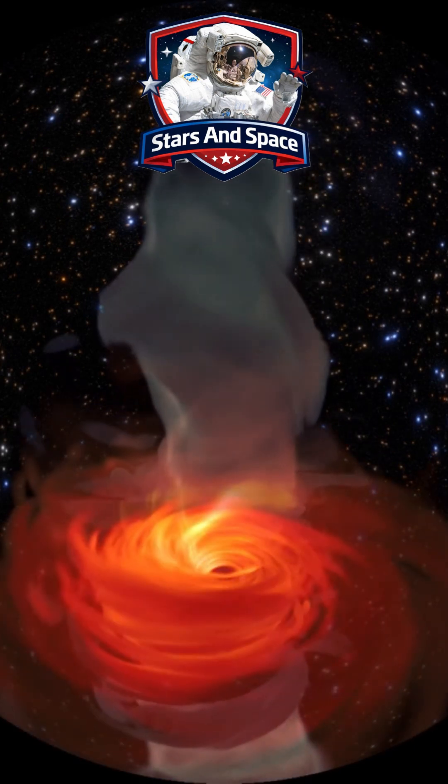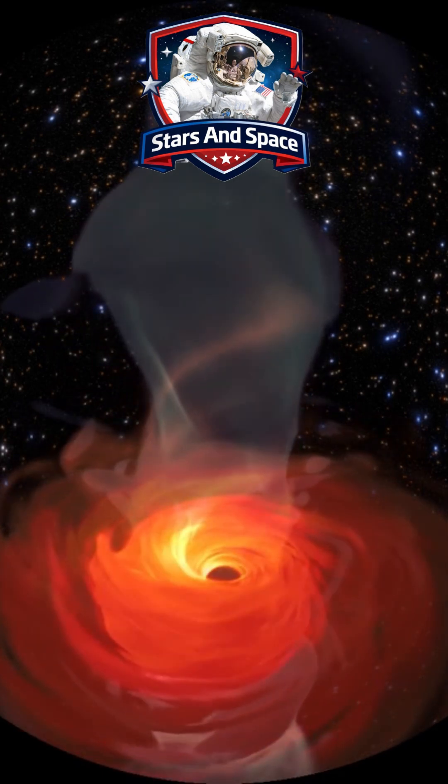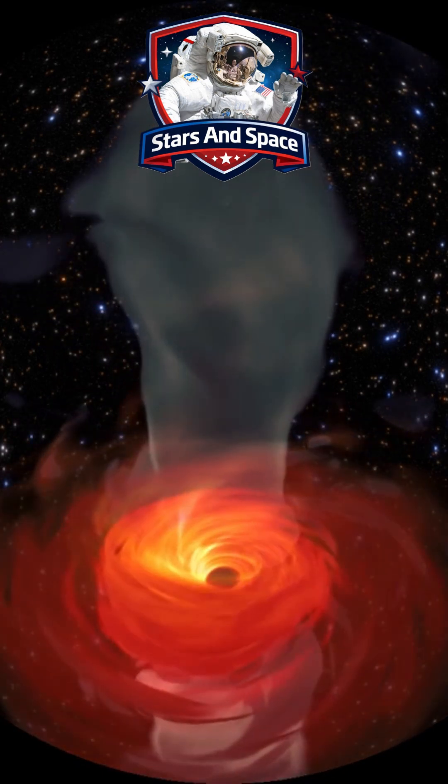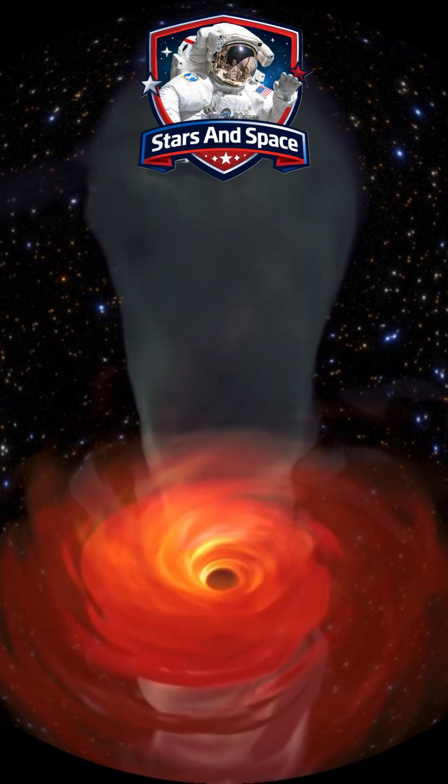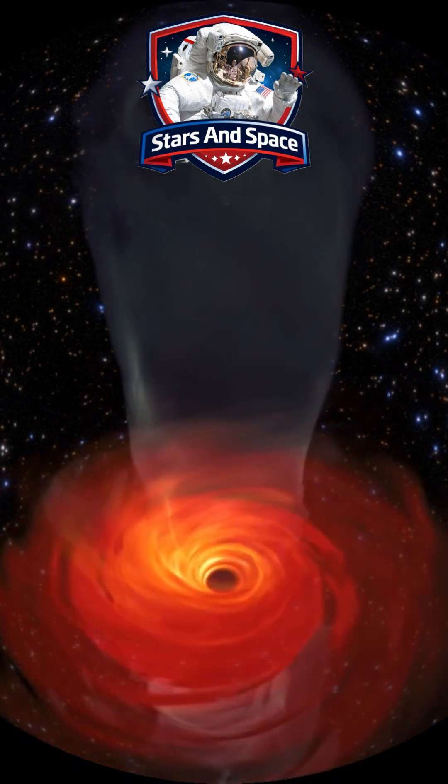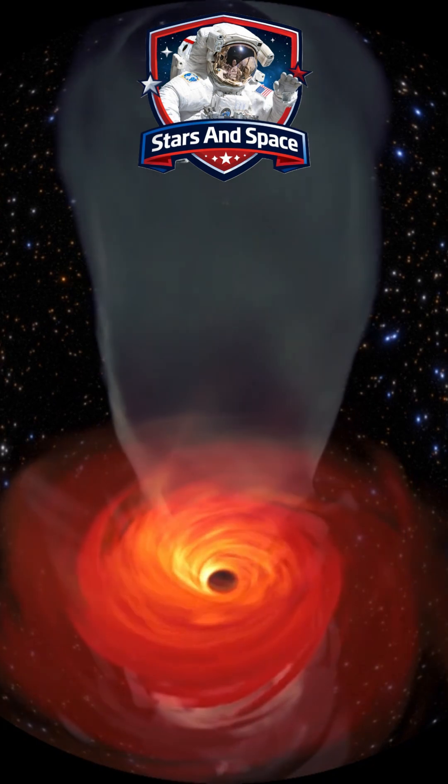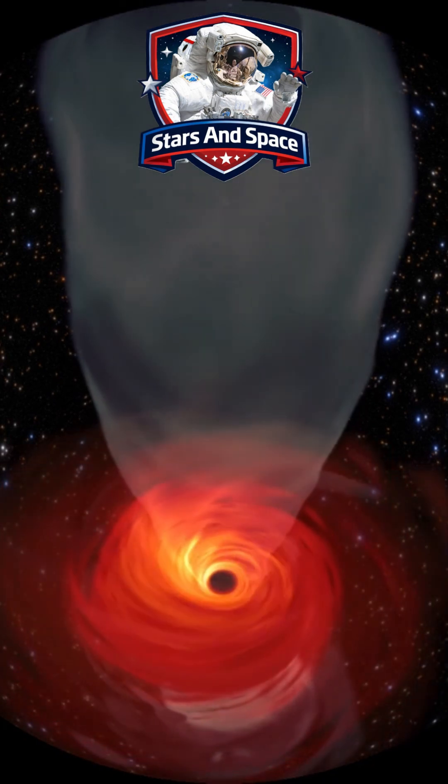Now, what the simulation shows: a black hole encircled by luminous, superheated matter, material spiraling inward in a vortex-like plunge, gas transformed into glowing plasma under extreme conditions.